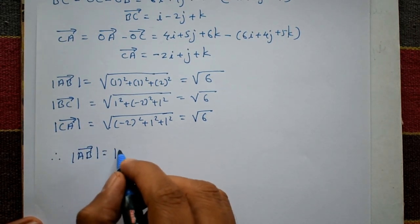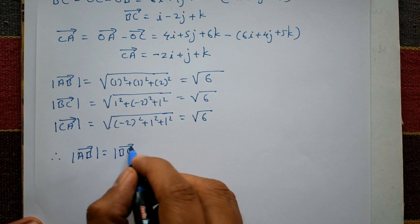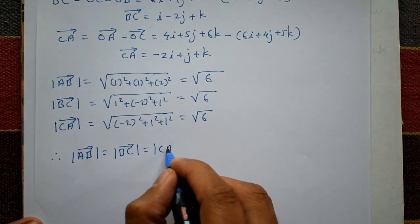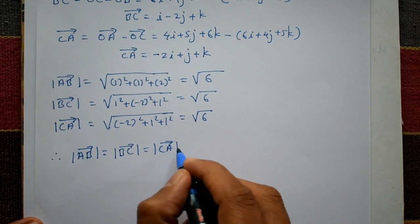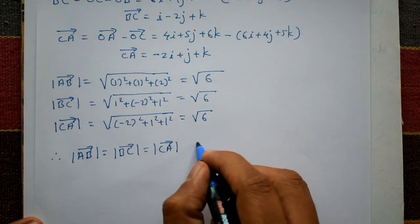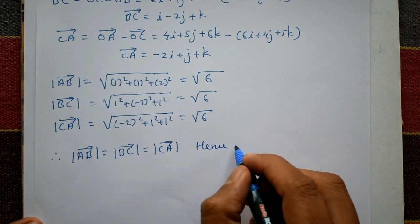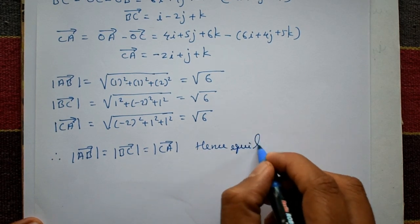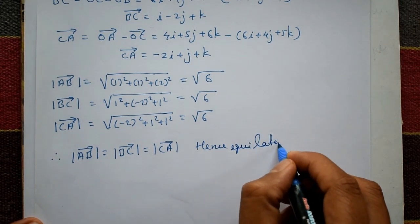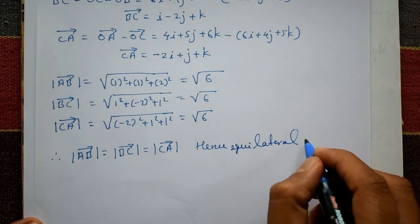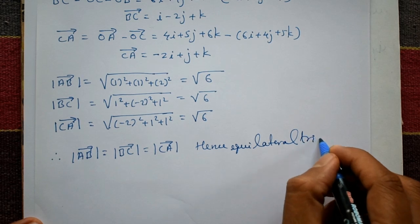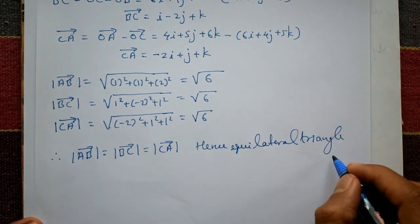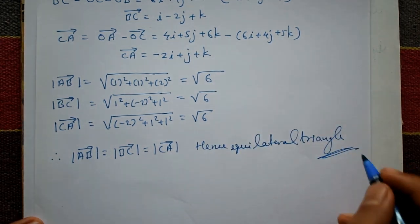Therefore, the magnitude of AB equals the magnitude of BC equals the magnitude of CA, all equal to √6. Hence, the triangle is an equilateral triangle because all sides are equal in value. This is the required solution.